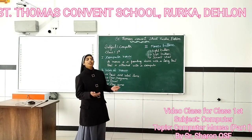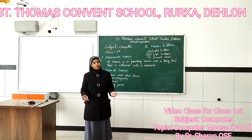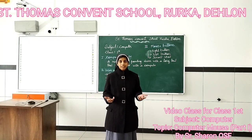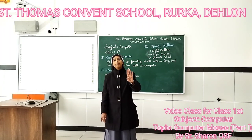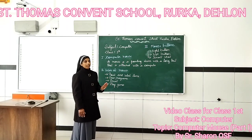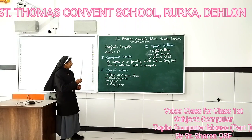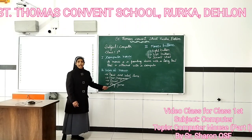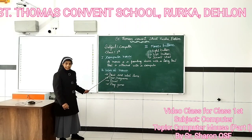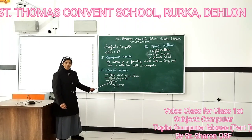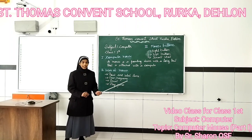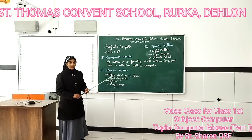Next, we are going to study the uses of computer mouse. What are the uses of computer mouse? There are four main uses of computer mouse. The first one is to point and select items. We can point and select items on a computer.